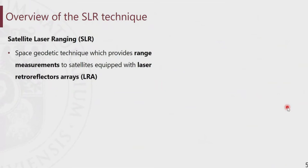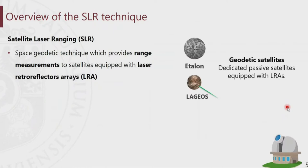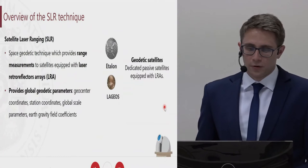Satellite laser ranging is a precise space geodetic technique that provides range measurements to artificial satellites equipped with laser retroreflector arrays. Originally, SLR observations are conducted to geodetic satellites, which are usually characterized with a small area-to-mass ratio, making them barely sensitive to non-gravitational forces. As a result, SLR contributes to the realization of the ITRF, providing, for example, geocenter coordinates, station coordinates, and the global scale parameter.